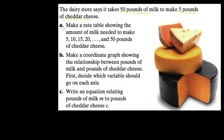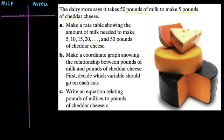We want to start by making a rate table showing the amount of milk needed to make 5, 10, 15, 20, and 50 pounds of cheddar cheese. So let's start with the rate table. A rate table breaks down the components to a ratio on a list. In this case, we have milk and cheese. So milk in one column, and cheese in the other. We're told that if we take 50 pounds of milk, we get 5 pounds of cheese.